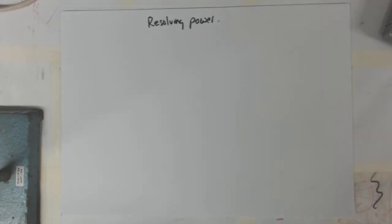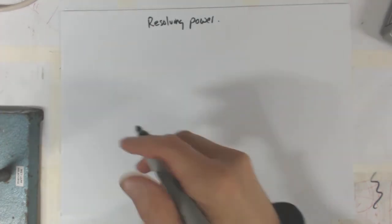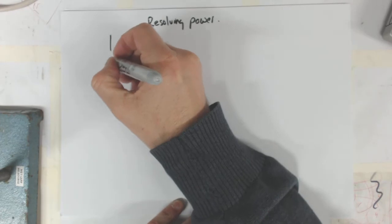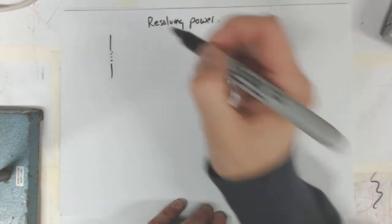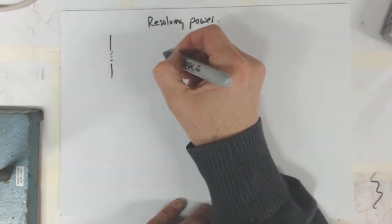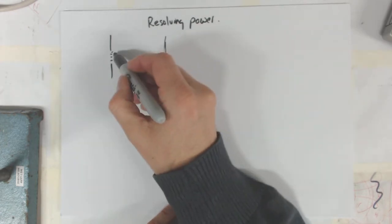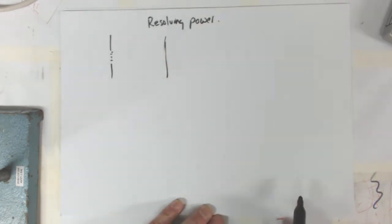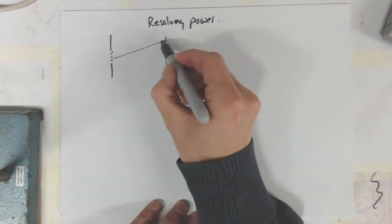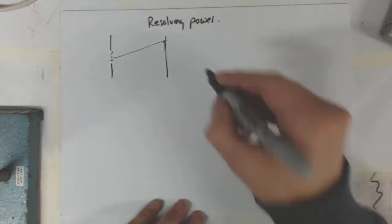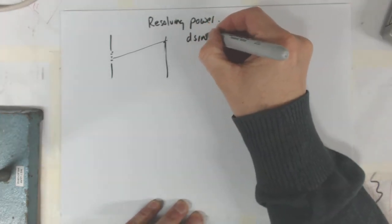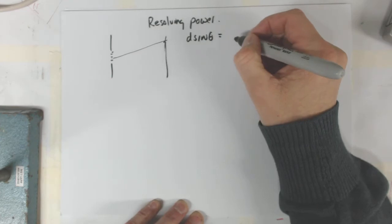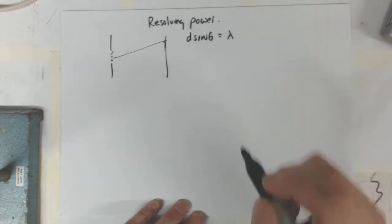I want to look at resolving power. Resolving power takes us back to when we looked at the diffraction for a single slit. Remember we did the diffraction for a single slit and we split it up into quarters. Then we had this screen that's actually a long way from the actual thing, and we took two points half the width of the slit.